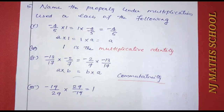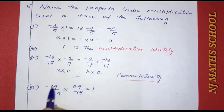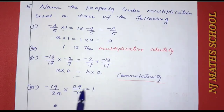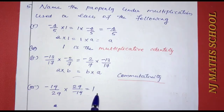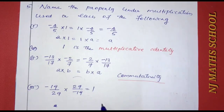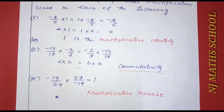Third: negative 19 by 29 into 29 by negative 19 equals 1. When a number is multiplied by its reciprocal, the result is 1. The property used is multiplicative inverse.